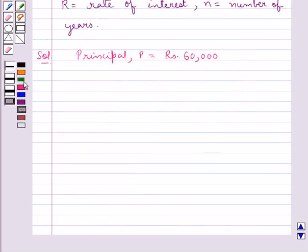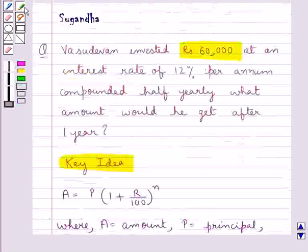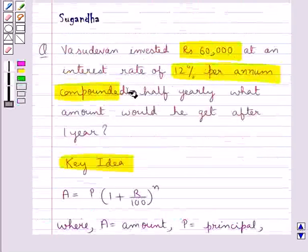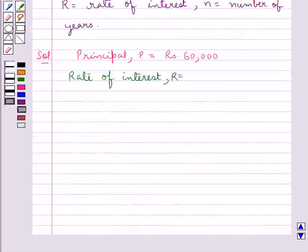And then, rate of interest R is given to be 12% per annum, compounded half yearly. Now, as it is given that the interest is compounded half yearly, in this case there are two conversion periods in a year, each after 6 months.